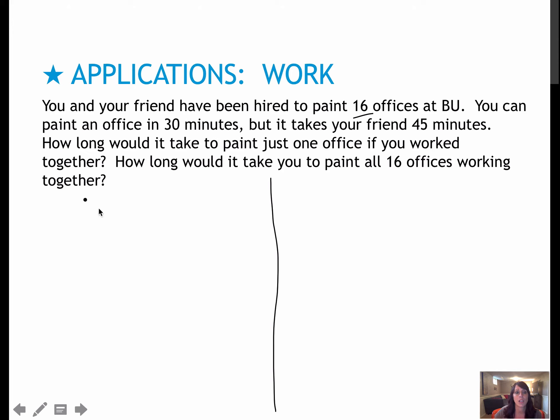We're going to do it the same way. I can do one job in 30 minutes, which is 30 over 60 or one-half of an hour. My friend can do one job in 45 minutes, which is 45 over 60 or three-fourths of an hour. For one job, I'm asking how much time, which I'll call T.